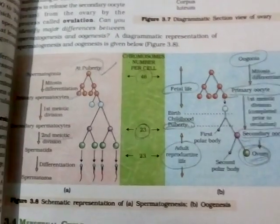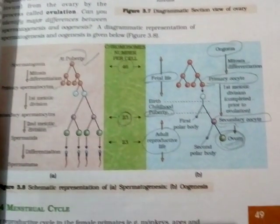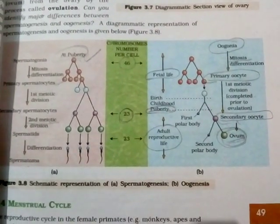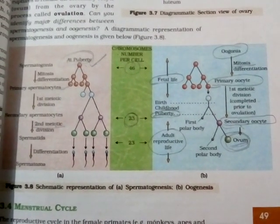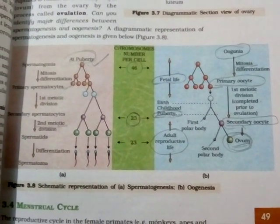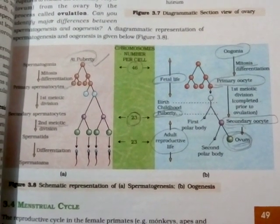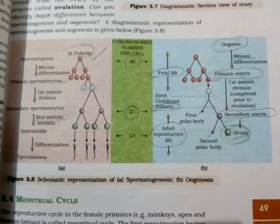This structure and the corpus luteum are both very important. I hope you all understand these processes and this systematic representation of spermatogenesis and oogenesis very well. Thank you so much.